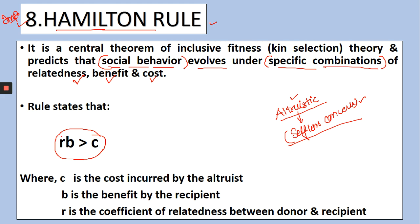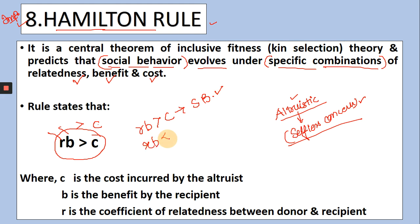Whatever social behavior — such as altruistic behavior — is being shown, the relationship of the one showing it with the one it is shown towards, and the benefit must be much greater than the cost. Why cost? Because it is selfless concern — the individual is saving others, attracting the predator's attention towards itself. If this condition is satisfied only then will social behavior like altruism appear. If cost is very high, the relationship is not close, the coefficient of relatedness is low, and the benefit is very low, then social behavior will not be shown.